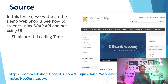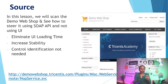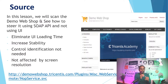Using SOAP API services instead of the user interface eliminates UI loading time, increases stability, and removes the need for control/object identification — you don't need to identify UI objects as required in web automation. Also, API testing is not affected by any screen resolution.